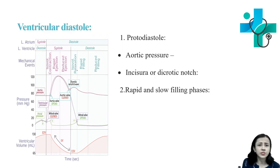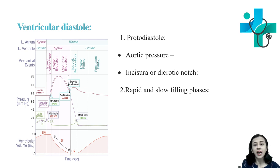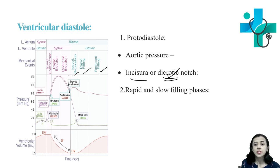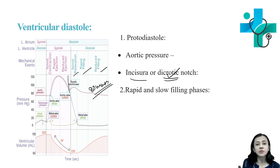Then comes protodiastole. Aortic pressure is slightly higher than left ventricular pressure. Due to this slightly higher pressure in the aorta, there is backward flow of blood, resulting in the incisura or dicrotic notch. After that, during isovolumetric relaxation, rapid filling, and slow filling phases, aortic pressure falls smoothly and continuously to about 80 mmHg. Because of the elasticity of the aorta, the pressure never falls below 80 mmHg.